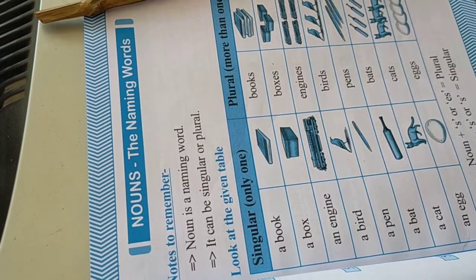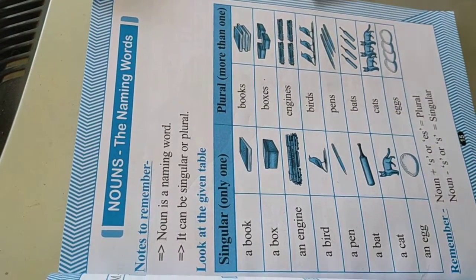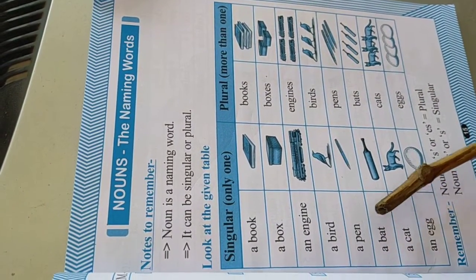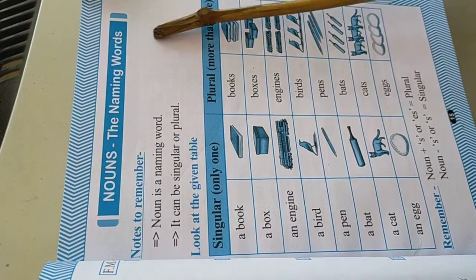We already know that naming words are called nouns, like book, box, engine, bird, pen, bat, cat, egg. These are the naming words.